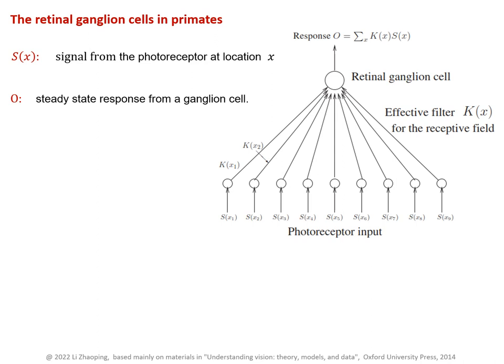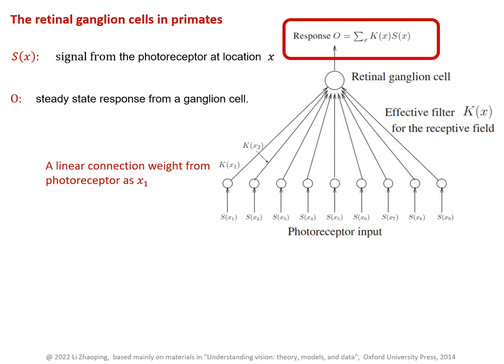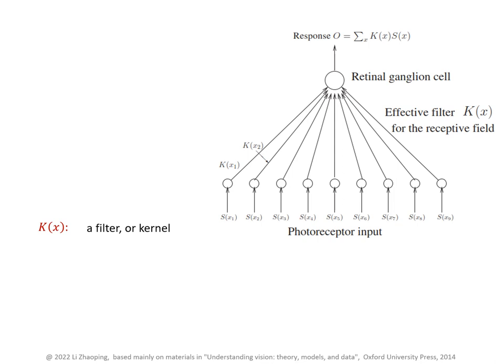O stands for output, and this O value can be modeled by this linear summation. It is as if from each photoreceptor there is a linear connection weight, and this connection weight is K(x1) from photoreceptor at location x1 and another weight K(x2) from photoreceptor at location x2, etc. And this function K(x) is often called a filter or a kernel. For each ganglion cell, this K(x) is non-zero only within a limited spatial region and negligible beyond this region. And this region defines the receptive field of this neuron.